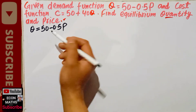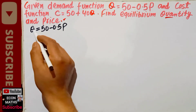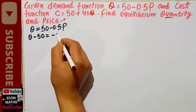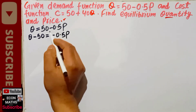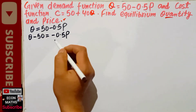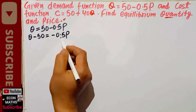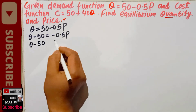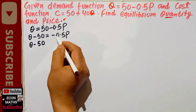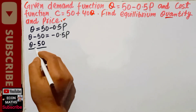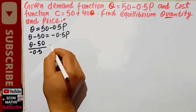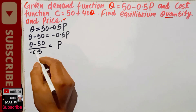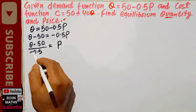We will now solve for P. Transposing 50 to the left-hand side, this becomes Q minus 50 = minus 0.5P. Now I will divide both sides by minus 0.5, so this will become our price function: Q divided by minus 0.5, minus 50 divided by minus 0.5, equals P.